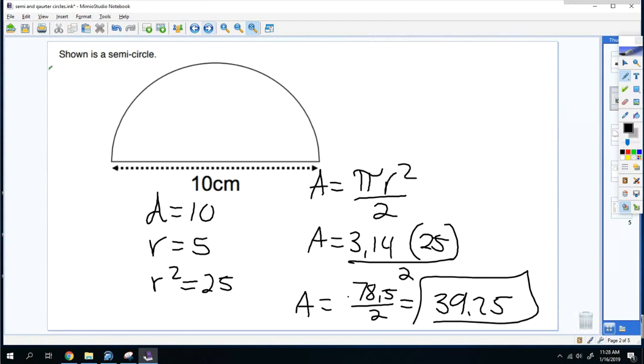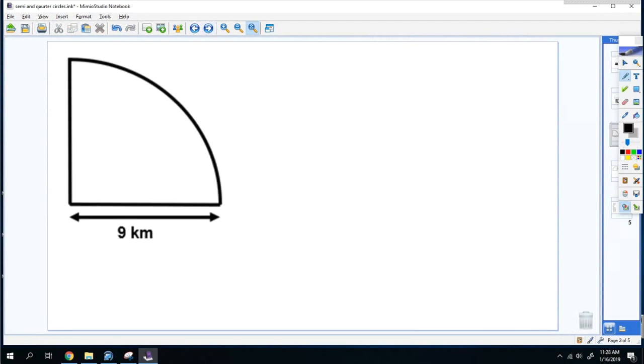Alright, that's semicircles. Now we're going to do quarter circles. So a quarter circle, well there's four quarters in a dollar, so you divide it by 4. So the area would be A = πr² ÷ 4.